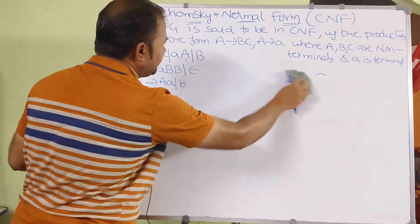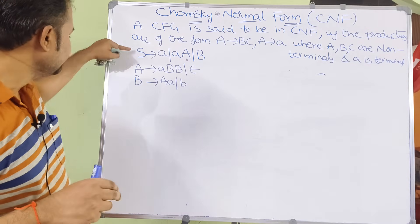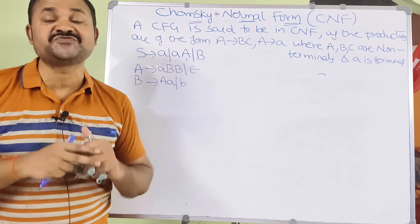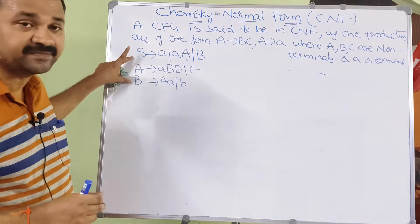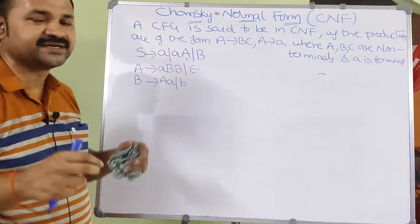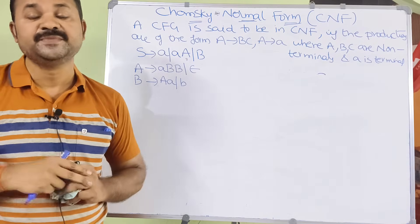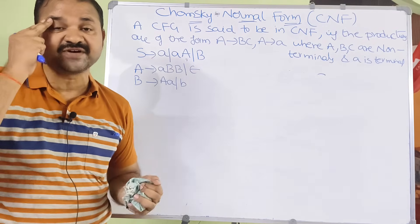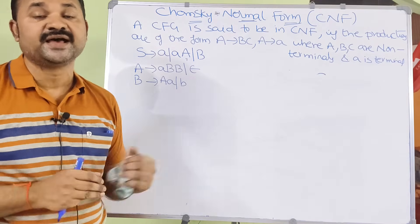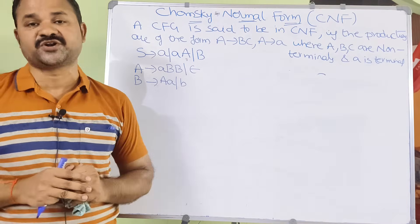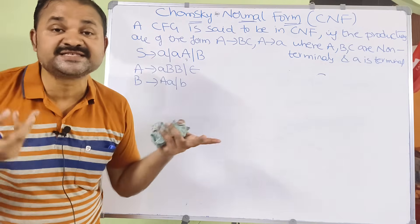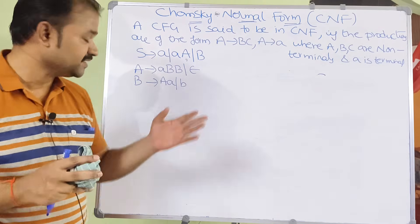Our target is to convert a context-free grammar into Chomsky Normal Form. First, we must check whether the CFG is in simplified (reduced/minimized) form. We need to check whether there are any epsilon productions, useless symbols, or unit productions.